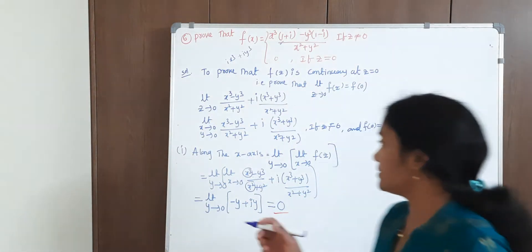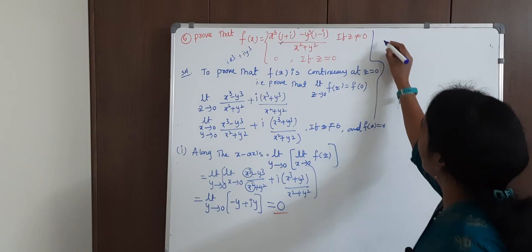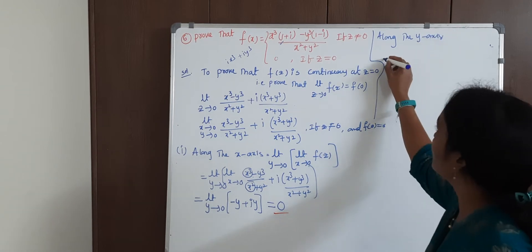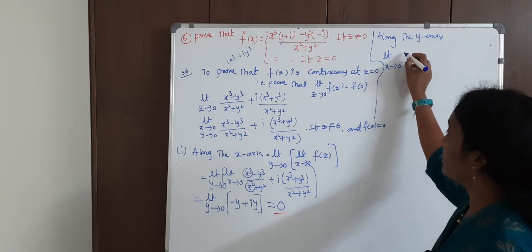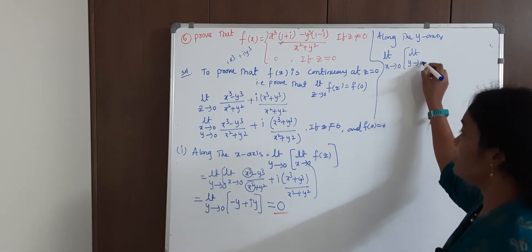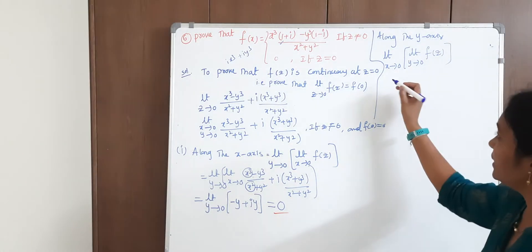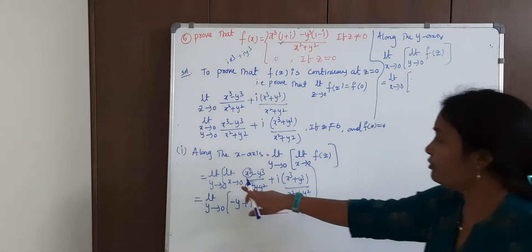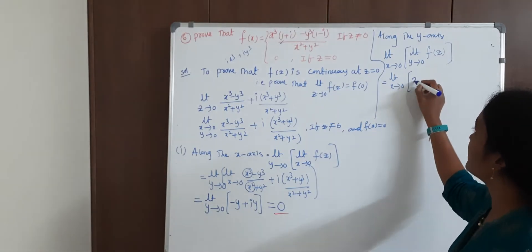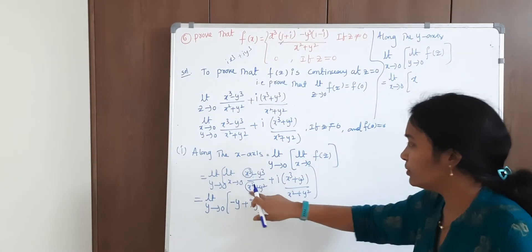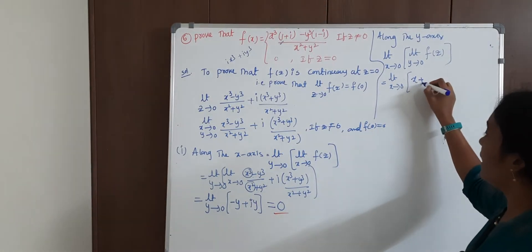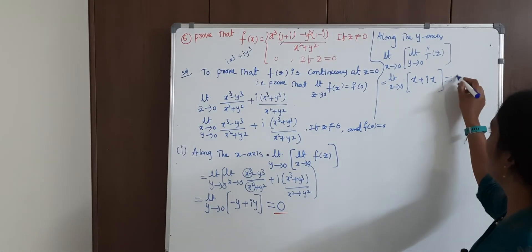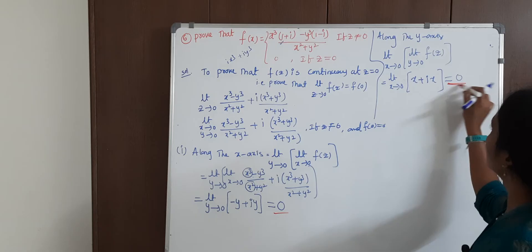Along the y-axis, we set x tends to 0. Writing limit as y tends to 0 with x = 0 substituted, the remaining terms give limit x tends to 0 of i·x, and taking x common we get x(1 + i). Since x tends to 0, we have 0 times something equals 0. So along the y-axis also, the limit is 0.